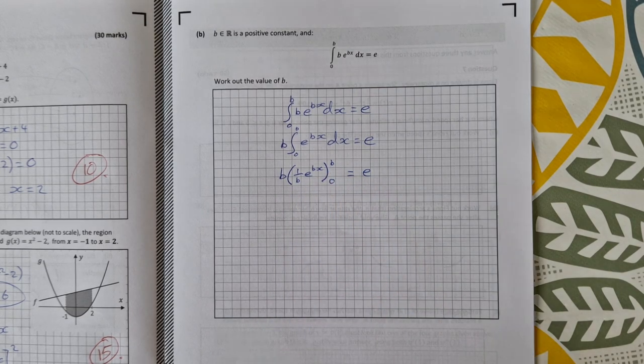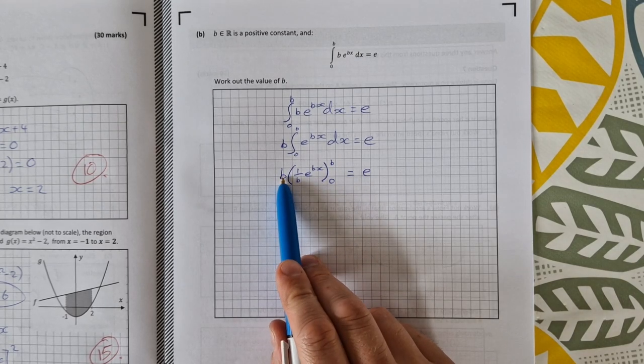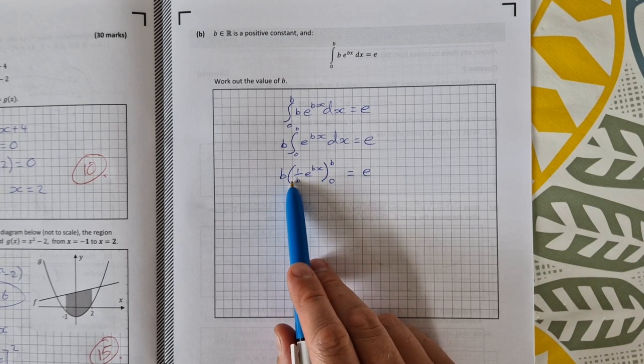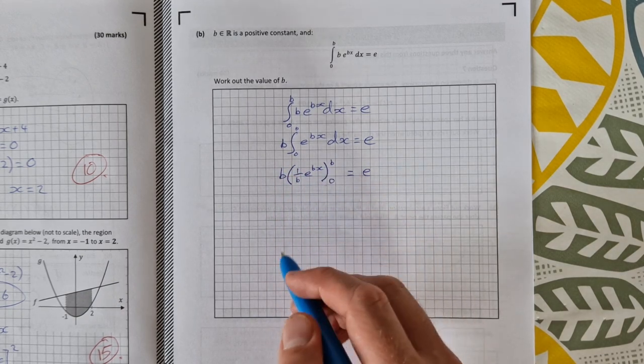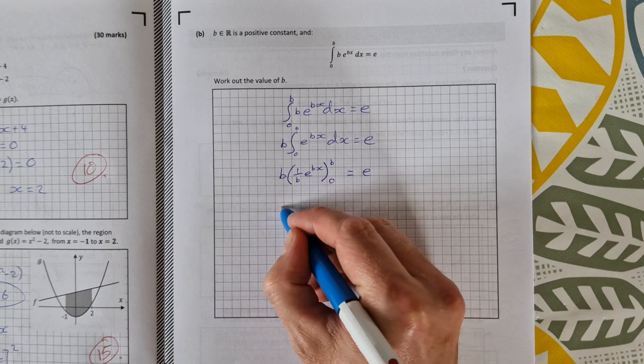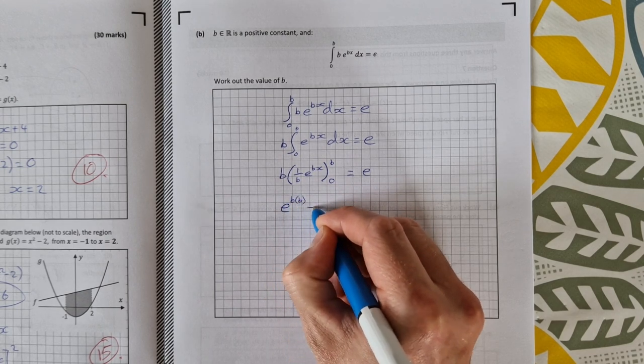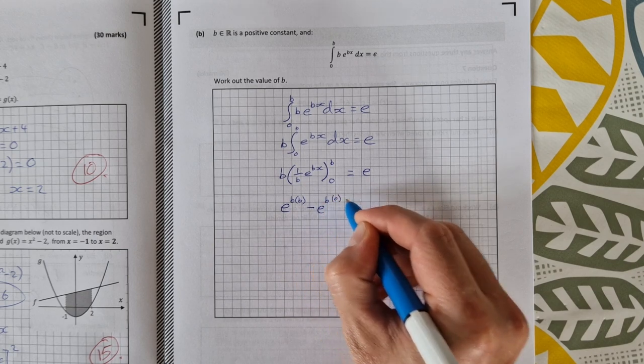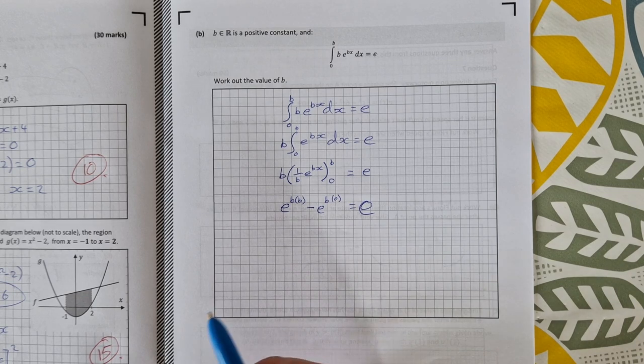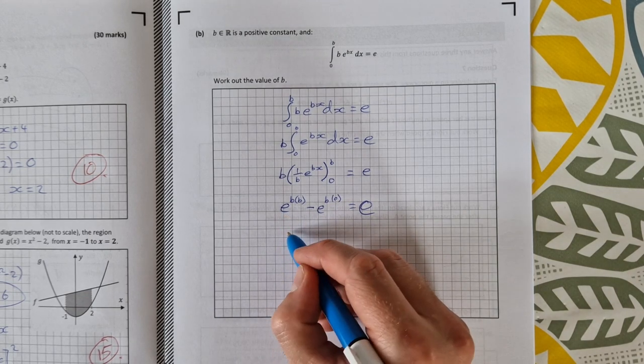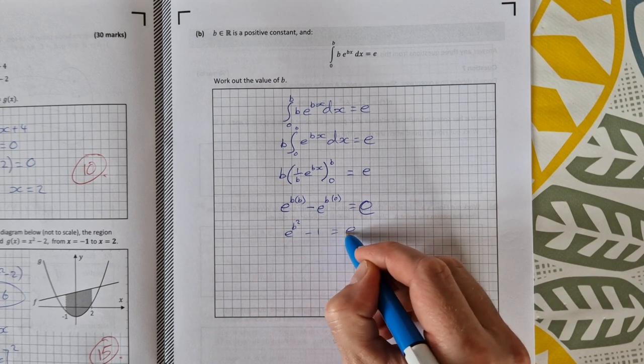Evaluating then between 0 and b, what I get is: first of all, the b and the 1/b will multiply together to give me 1, so I can forget about the b and the 1/b altogether. Then throw in my 0 and b, I get e^(b·b) - e^(b·0) = e. So that's e^(b²) - 1 = e.